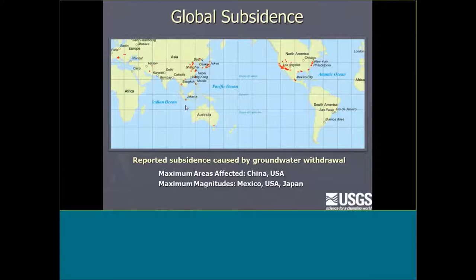When you have subsidence on the coast, sea level rise absolutely exacerbates those problems. Venice had this too during high tides. California and the U.S. have a lot of subsidence markers, as does China. This isn't an exhaustive list — you might correlate the number of markers with development and available resources to measure it. There's probably a lot of unidentified subsidence areas not on this map. Between the U.S. and China, we have the maximum areas affected and the maximum magnitudes — Mexico City may be the only one beating out the Central Valley right now.